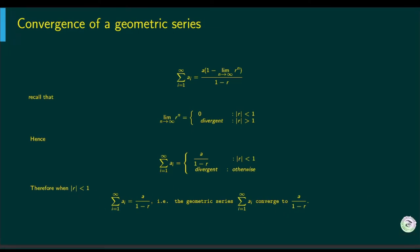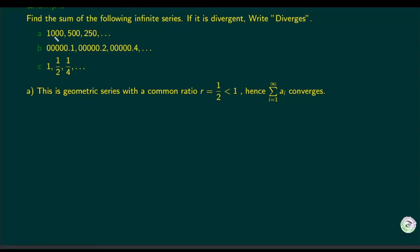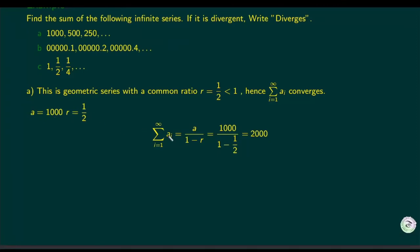Let's look at a concrete example. For a geometric series, we identify a and r. If the first term is 1000 and the ratio is one-half (dividing any term by the previous gives one-half), then plugging into a/(1 − r) gives 1000/(1 − 1/2) = 2000. So the sum of this infinite series is 2000.